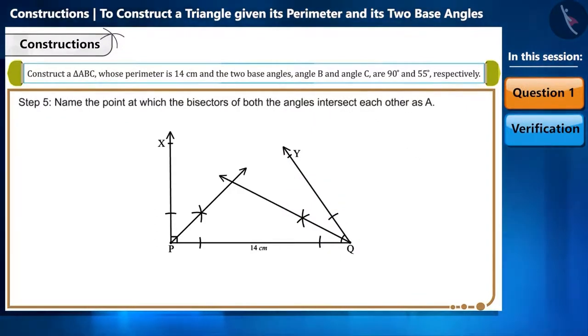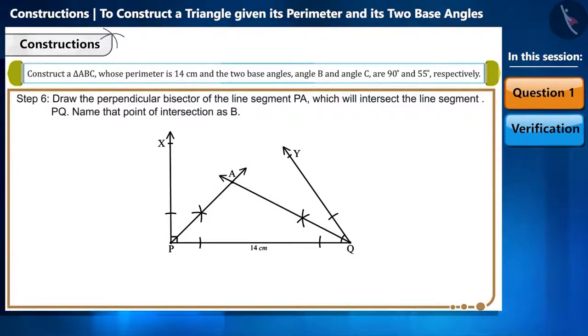Step 5: Name the point at which the bisectors of both the obtained angles intersect each other as A. Step 6: Now draw the perpendicular bisector of the line segment PA.